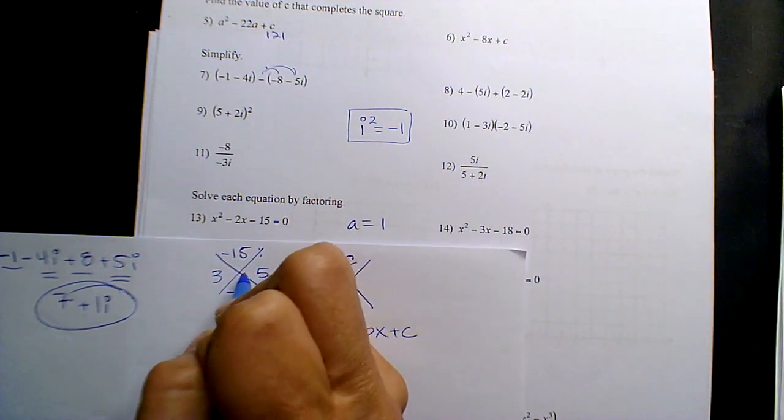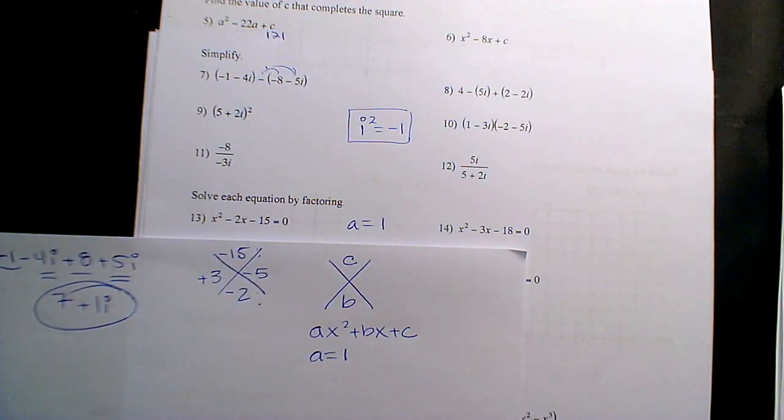So it's 3 and 5, and 5 is negative, and 3 is positive, right? Yeah.